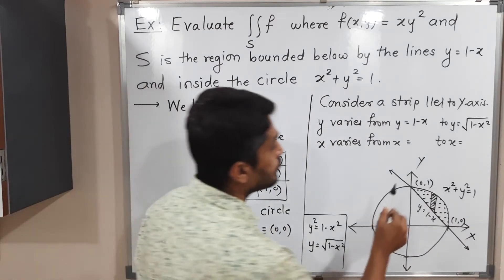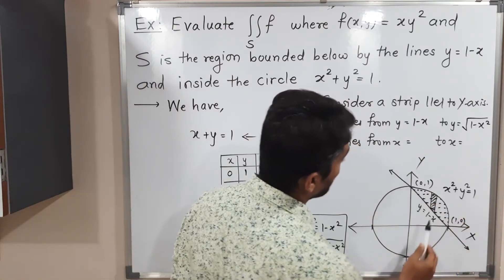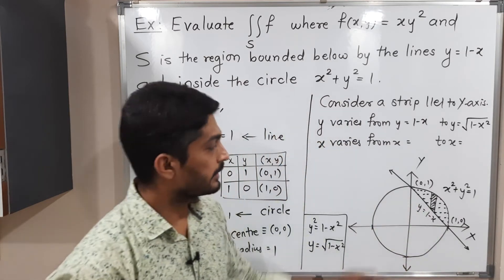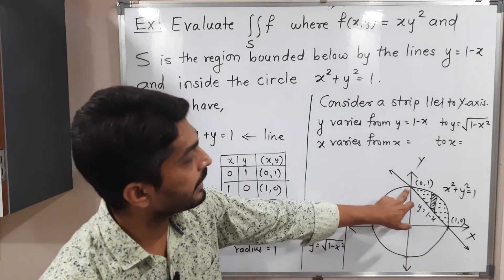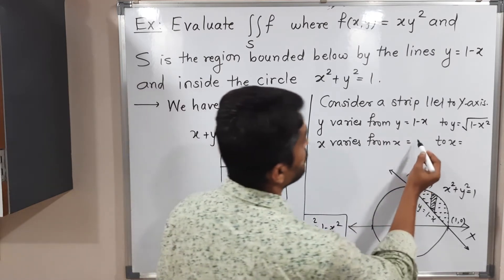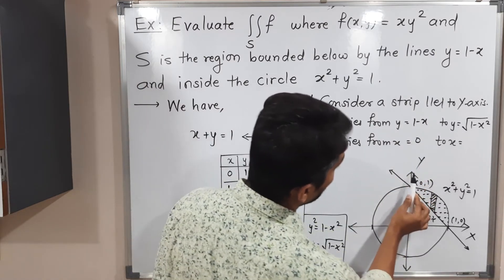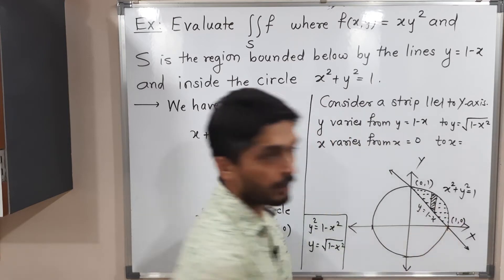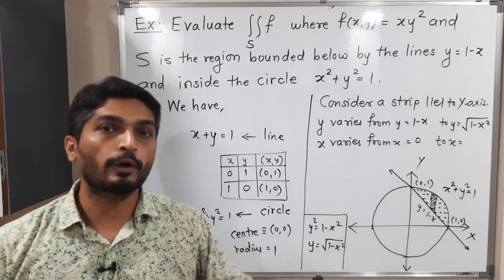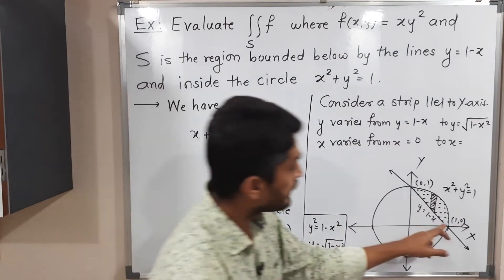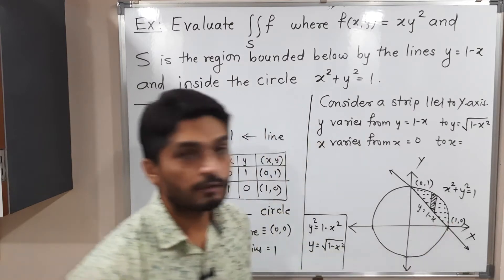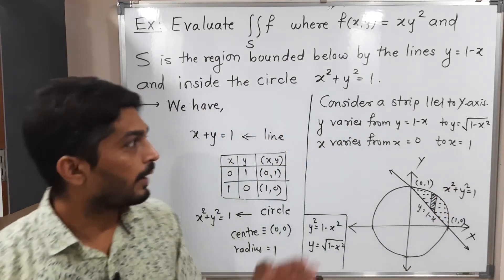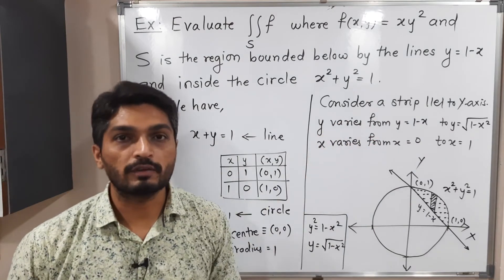The strip moves from left to right. On the left it starts at the point where x = 0, and it goes up to the point where x = 1 to cover every point of the region of integration. So we have limits: y from (1 minus x) to √(1 minus x²), and x from 0 to 1.